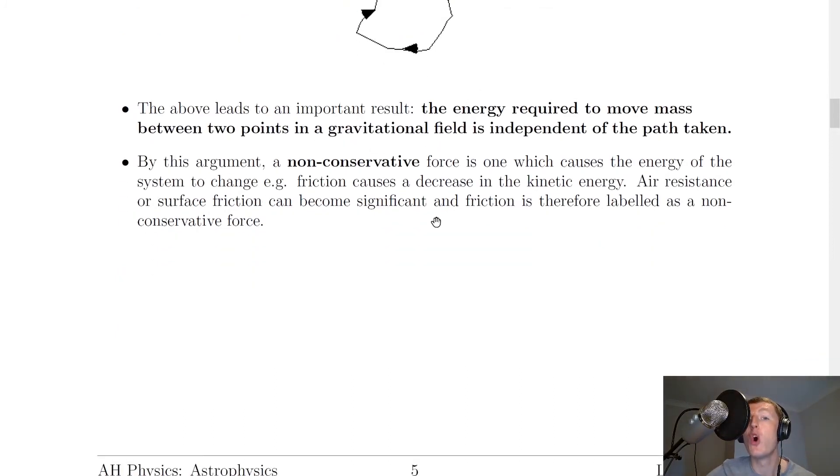And lastly, by this argument, a non-conservative force is one which causes the energy of the system to change. For example, friction causes a decrease in the kinetic energy. Air resistance or surface friction can become significant and friction is therefore labelled as a non-conservative force. So if we take into account friction in the form of air resistance or surface friction, when we're doing questions, then that means we're dealing with non-conservative forces. However, you'll notice in questions throughout National 5 Higher and Advanced Higher Physics that often we just assume air resistance or friction to be negligible and therefore ignore it, so that we can deal with only conservative forces and not non-conservative forces, as that's going to make things easier for us.